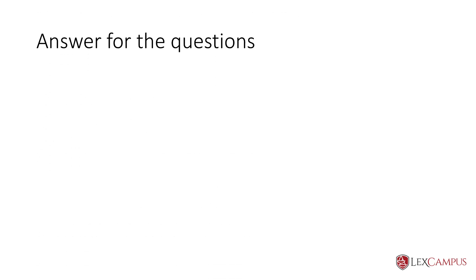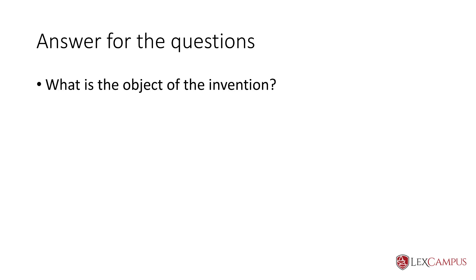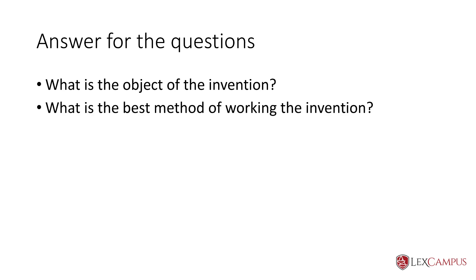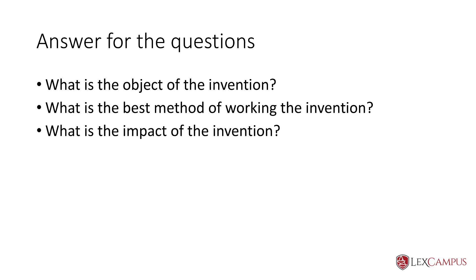During the search you are looking for answers to certain questions: what is the object of the invention, what is the best method of working the invention, and what is the impact of the invention. Once you understand this, it is easier to do the search because most likely an existing patent would claim the best method of its working, would describe its object and the impact too.